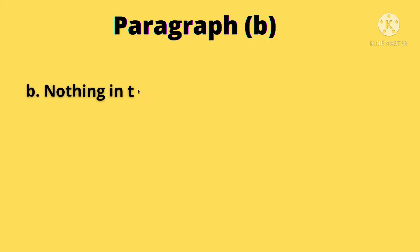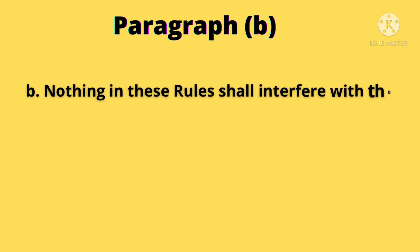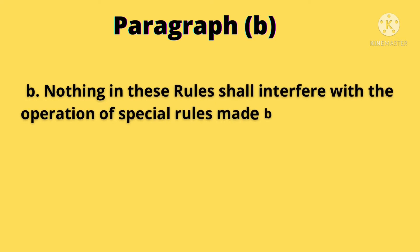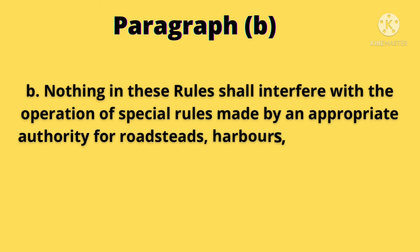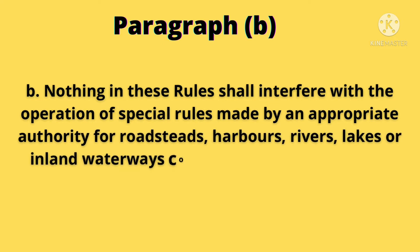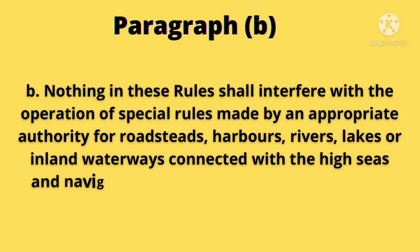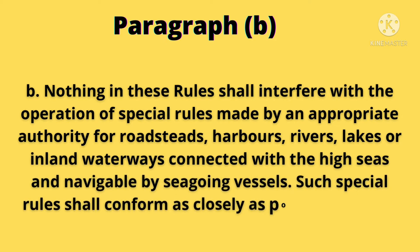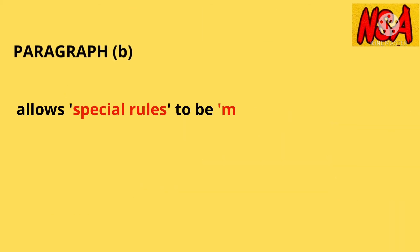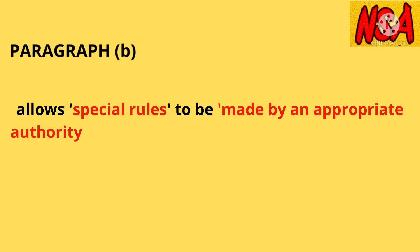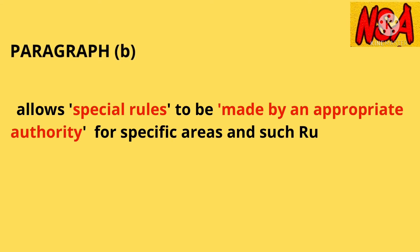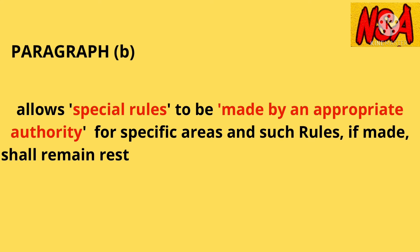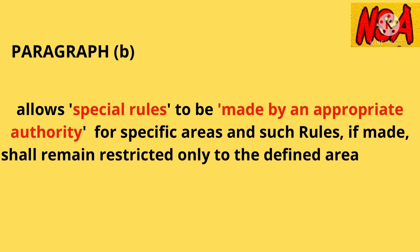Paragraph B: Nothing in these rules shall interfere with the operation of special rules made by an appropriate authority for roadsteads, harbors, rivers, lakes, or inland waterways connected with the high seas and navigable by seagoing vessels. Such special rules shall conform as closely as possible to these rules. Paragraph B allows special rules to be made by an appropriate authority for specific areas, and such rules, if made, shall remain restricted only to the defined areas stated in this paragraph.